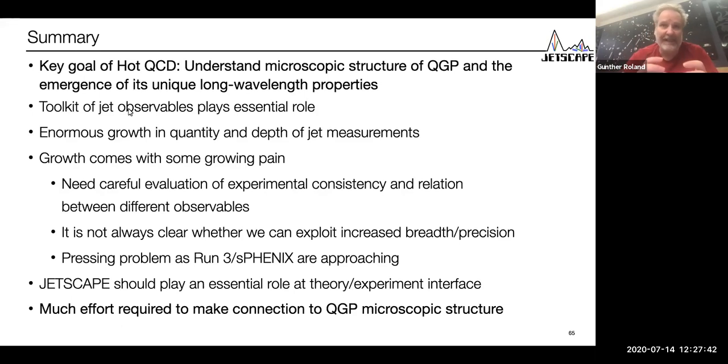There are irreducible effects in the physics, from hadronization and from the underlying event. We need to understand whether we can do this extrapolation from the jets to the parton shower in the face of these lossy transformations. This is a very pressing problem as run three and the new era at RHIC are approaching. We will make a qualitative step forward in precision, statistics and breadth of observables. We need to be ready to make sense of all of that. Jetscape should play an essential role and bring theorists and experimentalists together. Much effort will be required to make the connection of what we can measure to what we can learn about QGP structure.